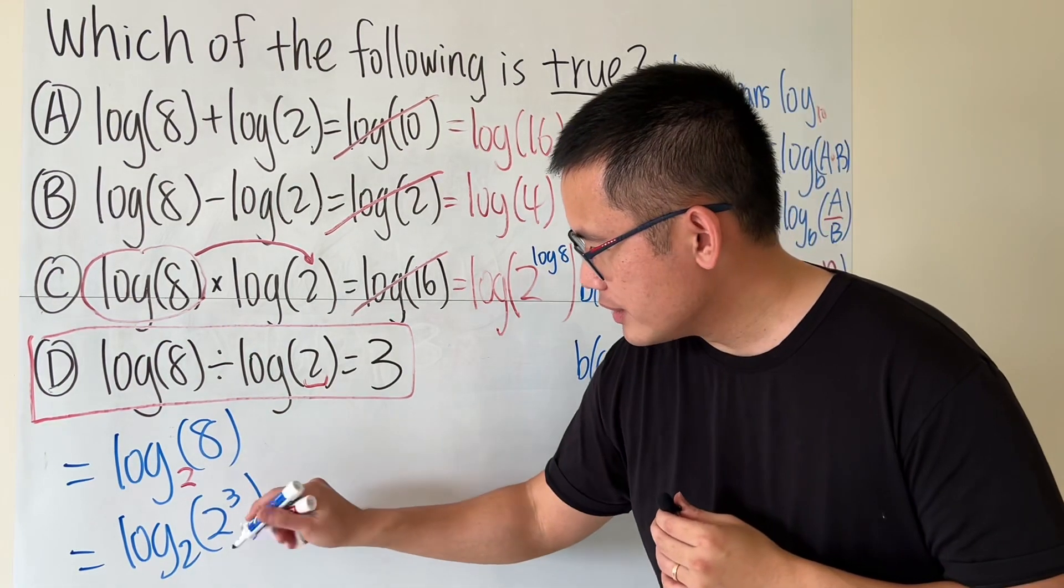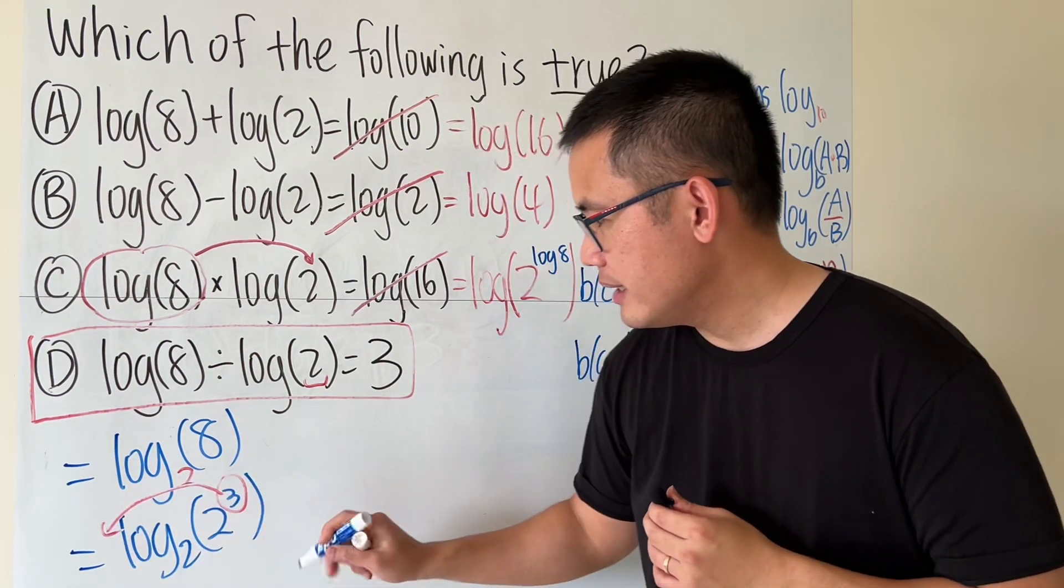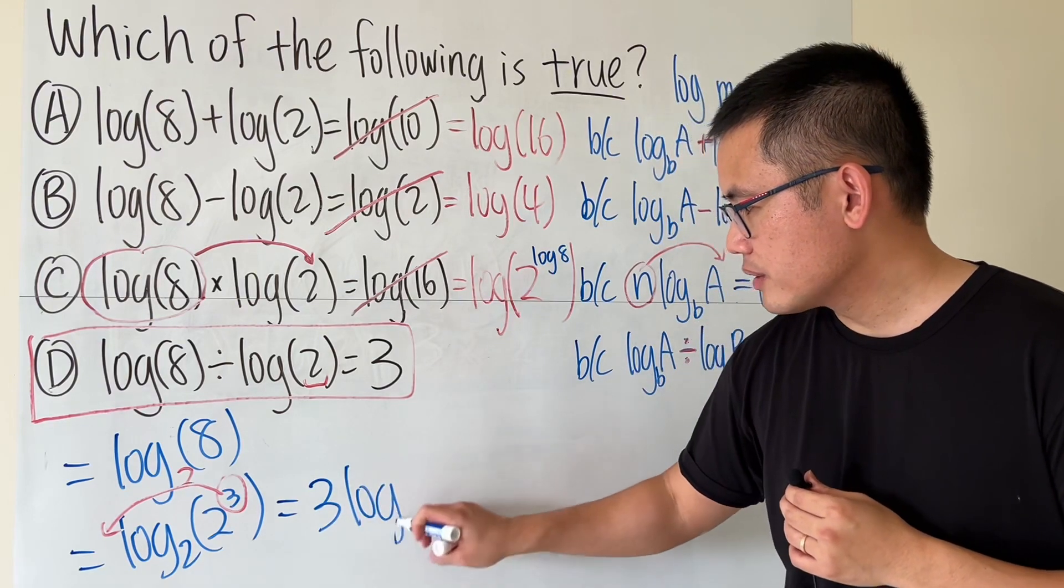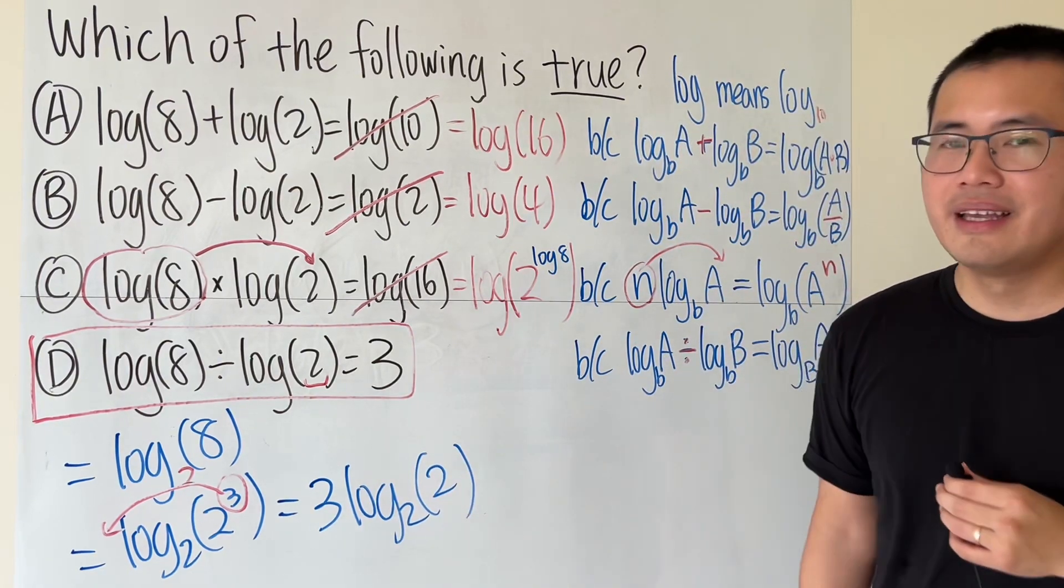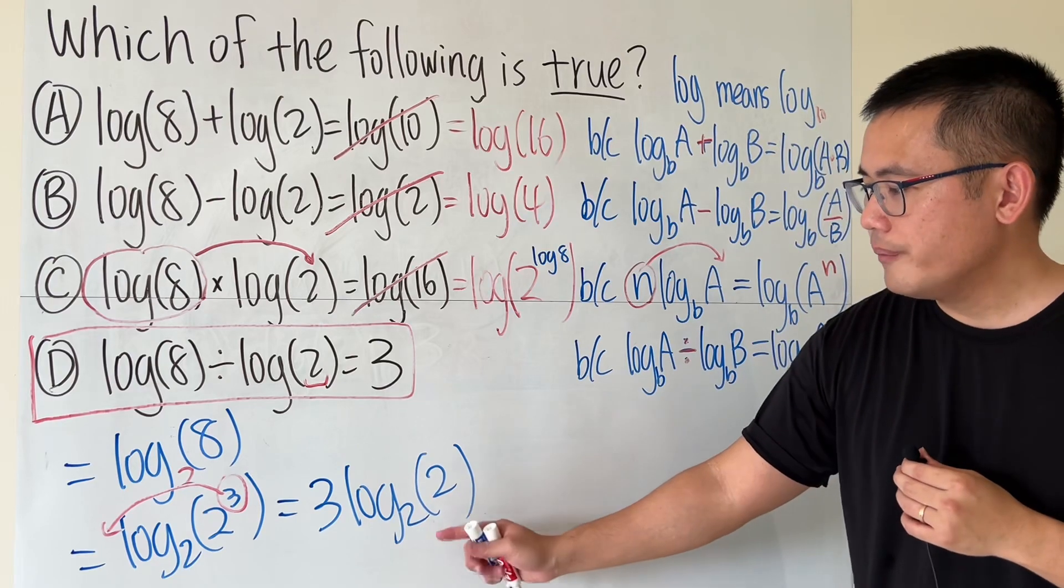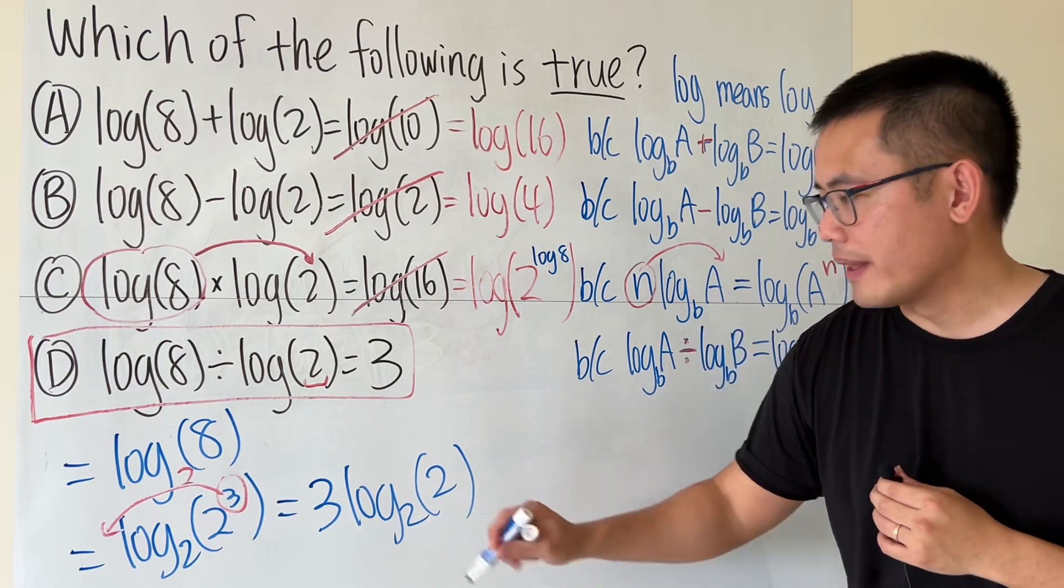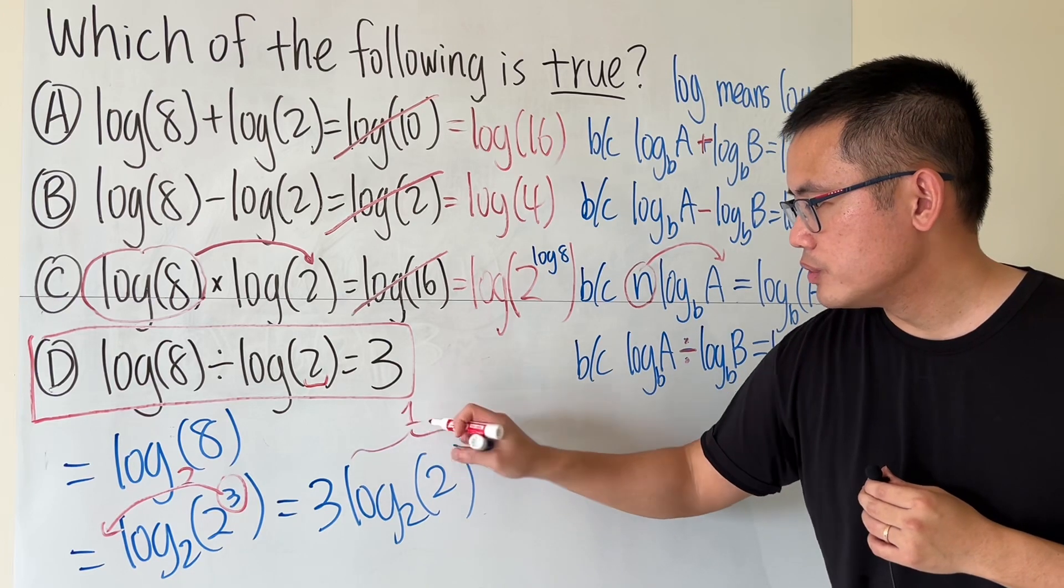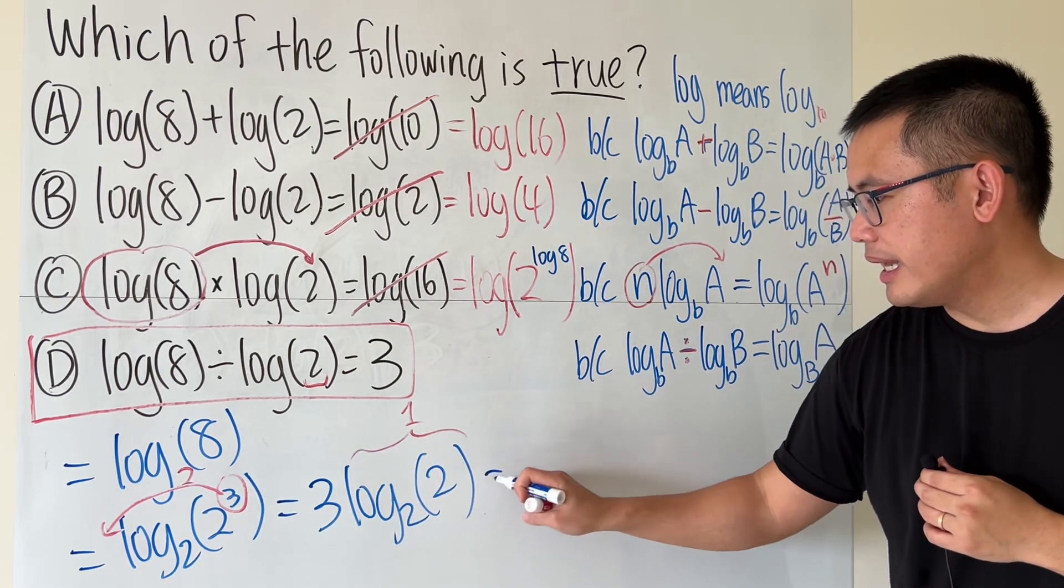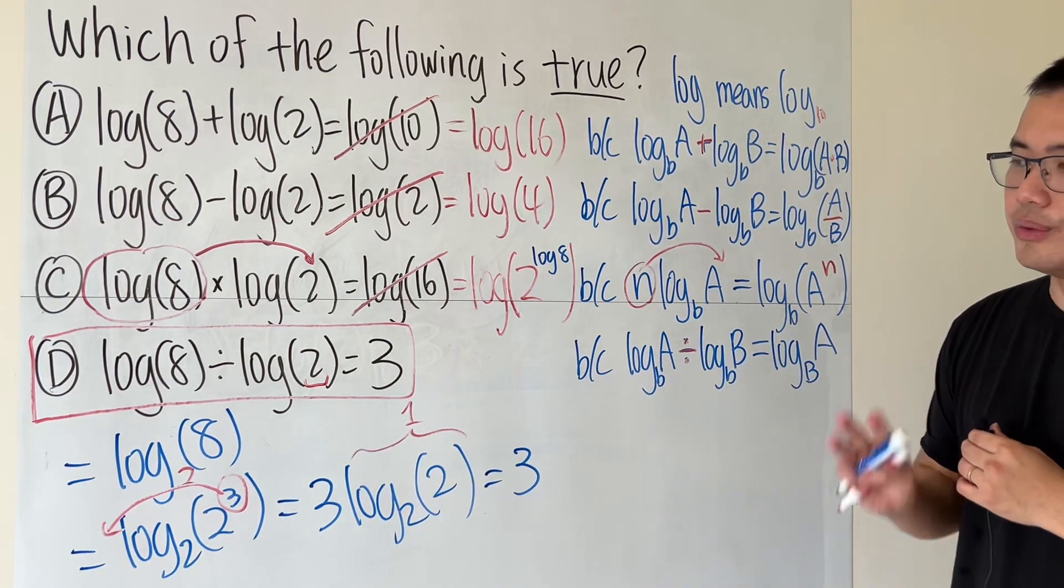So we can put the 3 to the front and then we look at 3 log base 2 of 2. And log base 2 of 2, when the base matches with this, this is just equal to 1. So this is just 3 times 1 and that's why the answer is just equal to 3.